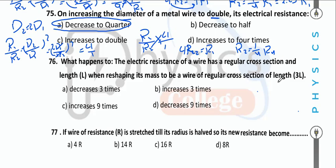A wire of regular cross-section is reshaped into a wire of length 3L. Since R is directly proportional to L² (after reshaping), the resistance increases by 3² = 9 times.